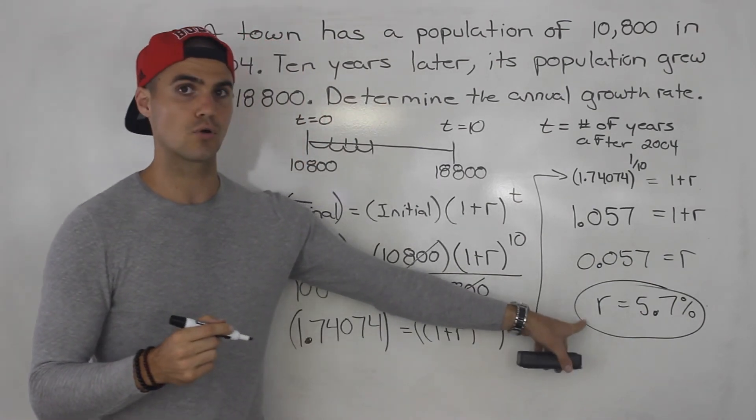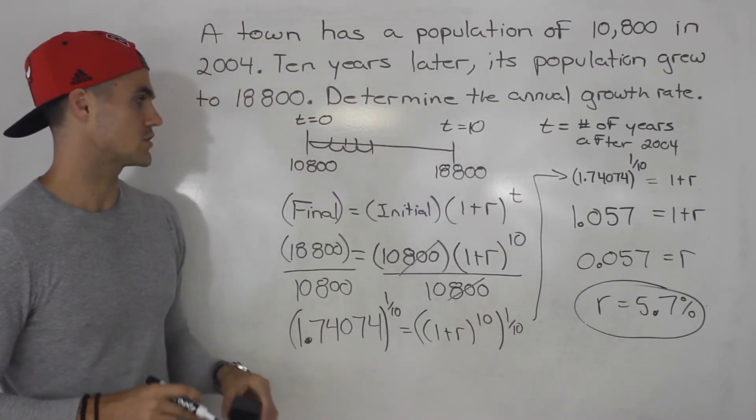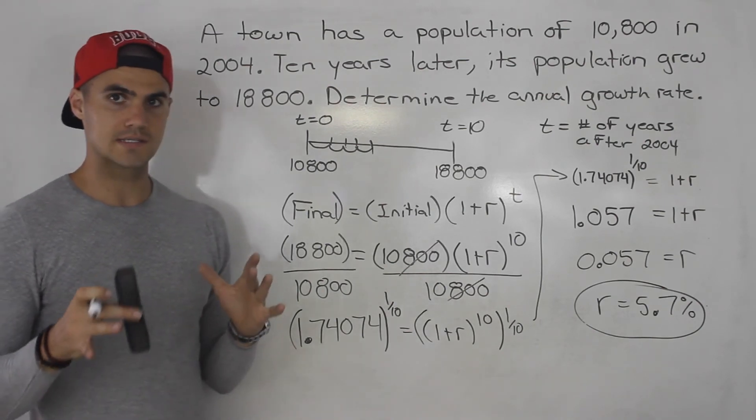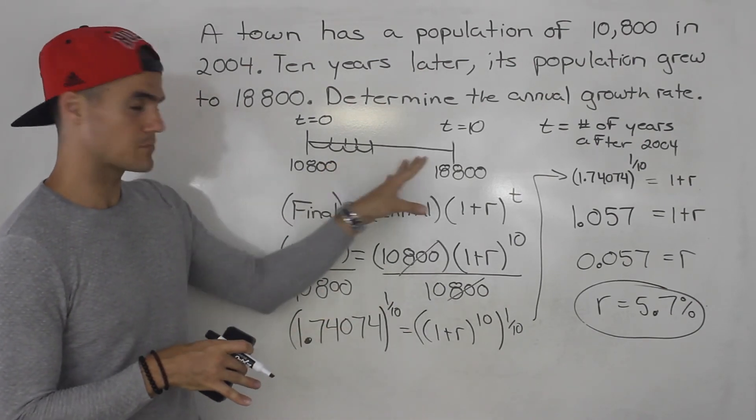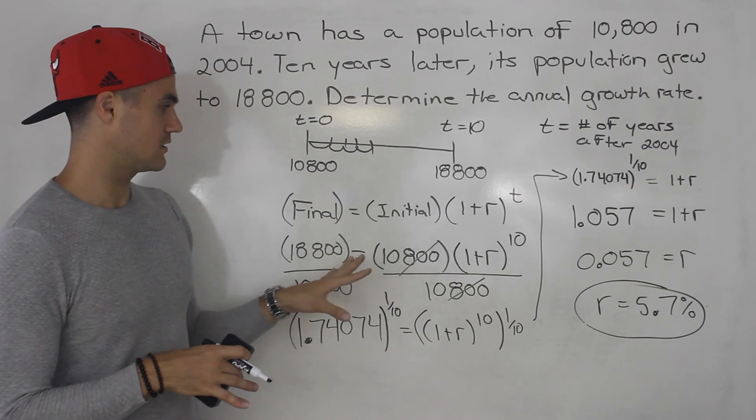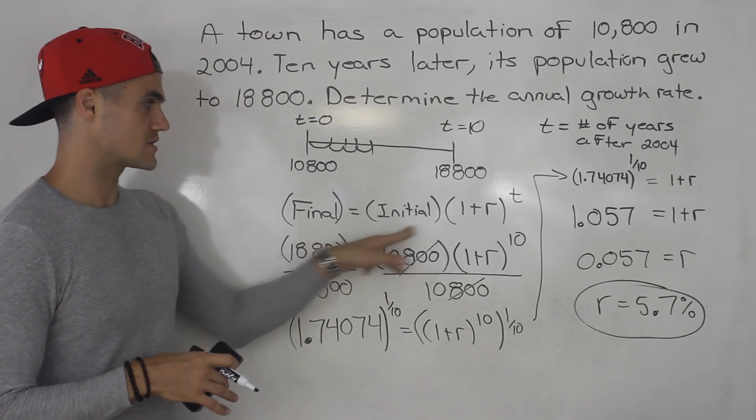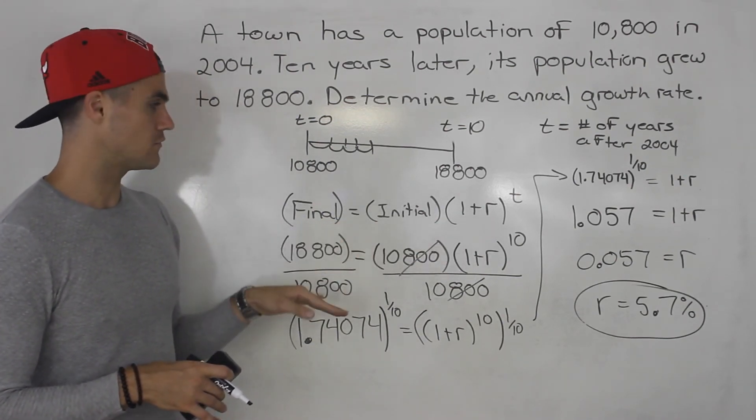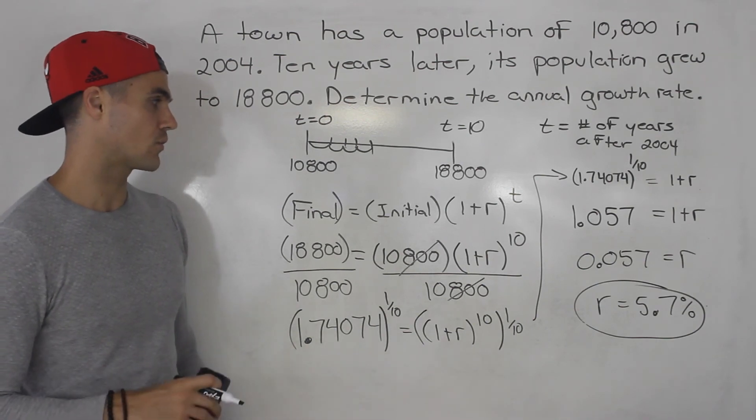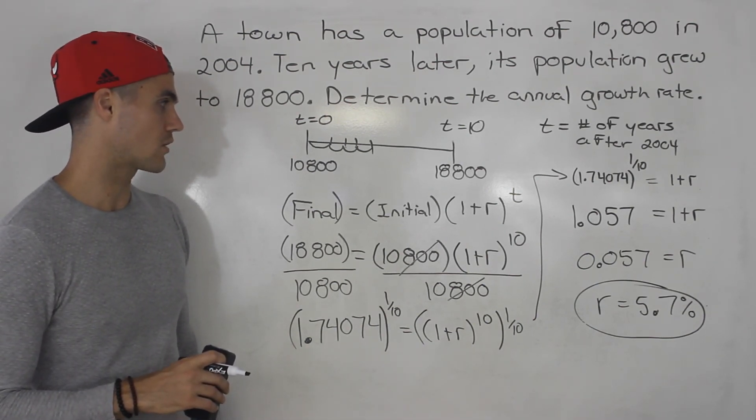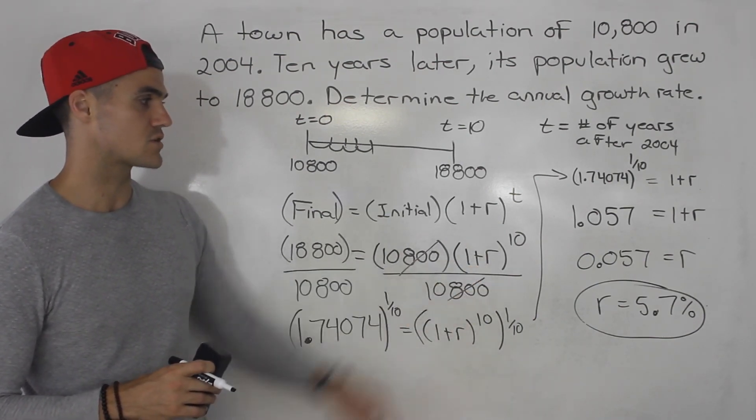So I'd recommend always taking these questions, drawing a timeline so you can see visually what's happening, and then using that general format that we know of, plug everything in and then solve for whatever variable you are asked to solve for. In this case, we are solving for the r, got 5.7%.